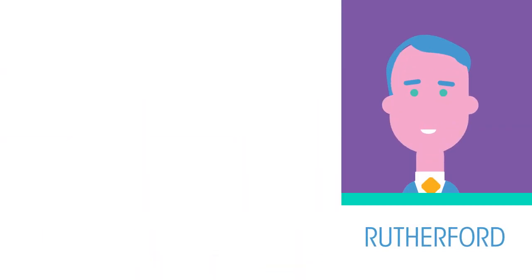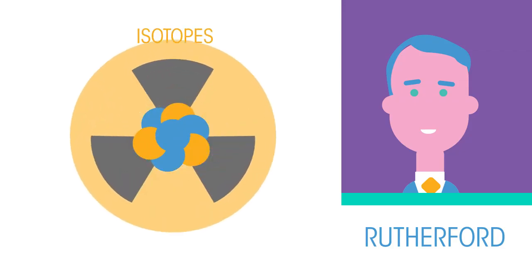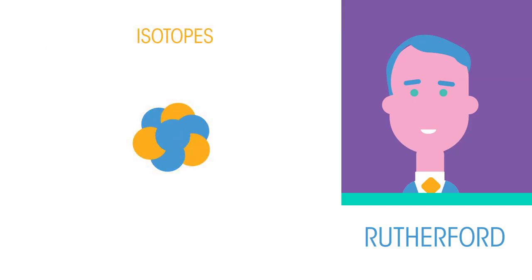It was found that many elements had isotopes that were naturally radioactive. They had an unstable nucleus which would decay in an attempt to achieve stability, emitting radiation as they did so.